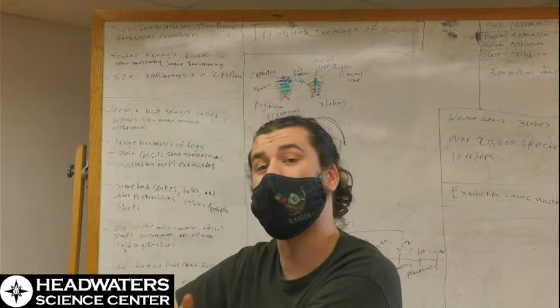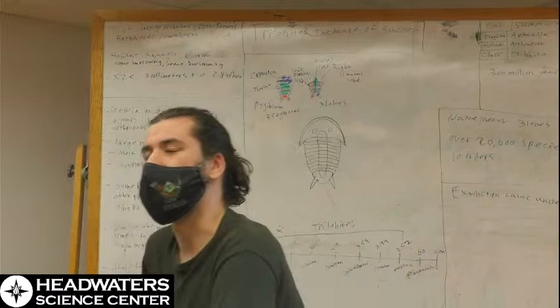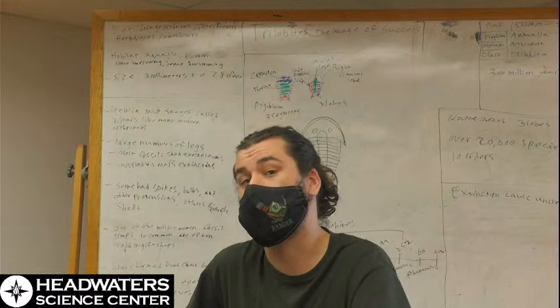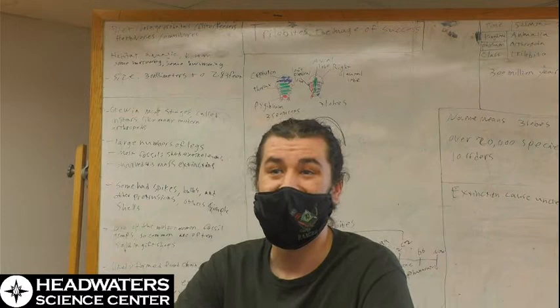They survived four or five mass extinctions depending on how you qualify a mass extinction, which is really impressive. It took the Permian mass extinction, which was the largest mass extinction in Earth's history, which wiped out approximately 90% of all living things—plants, animals, fungi on Earth—it took that to wipe out trilobites entirely.